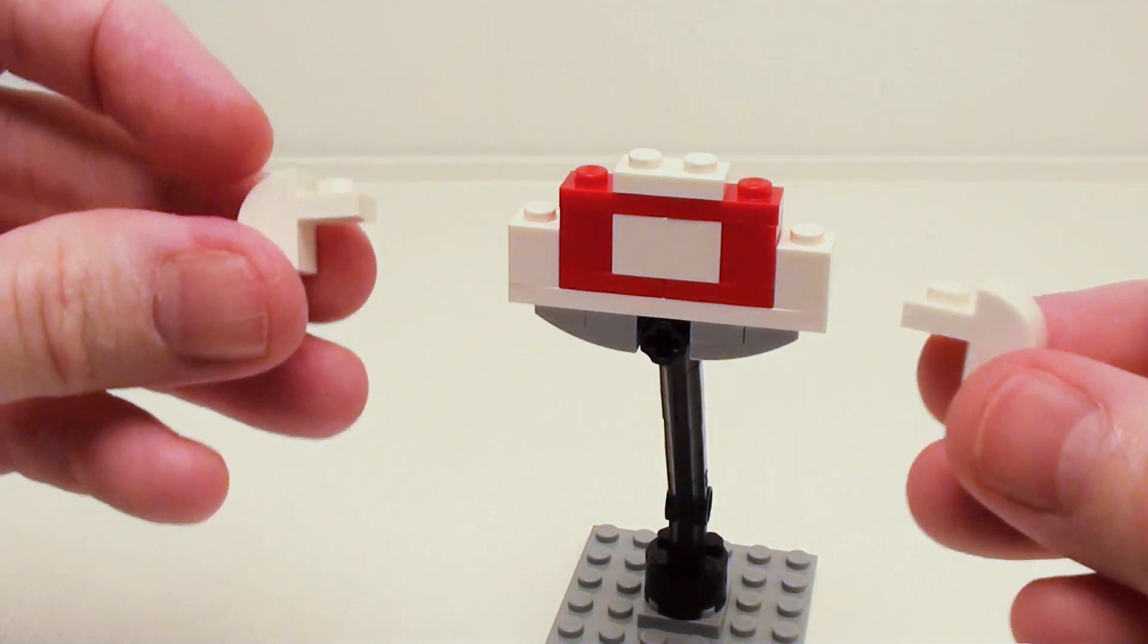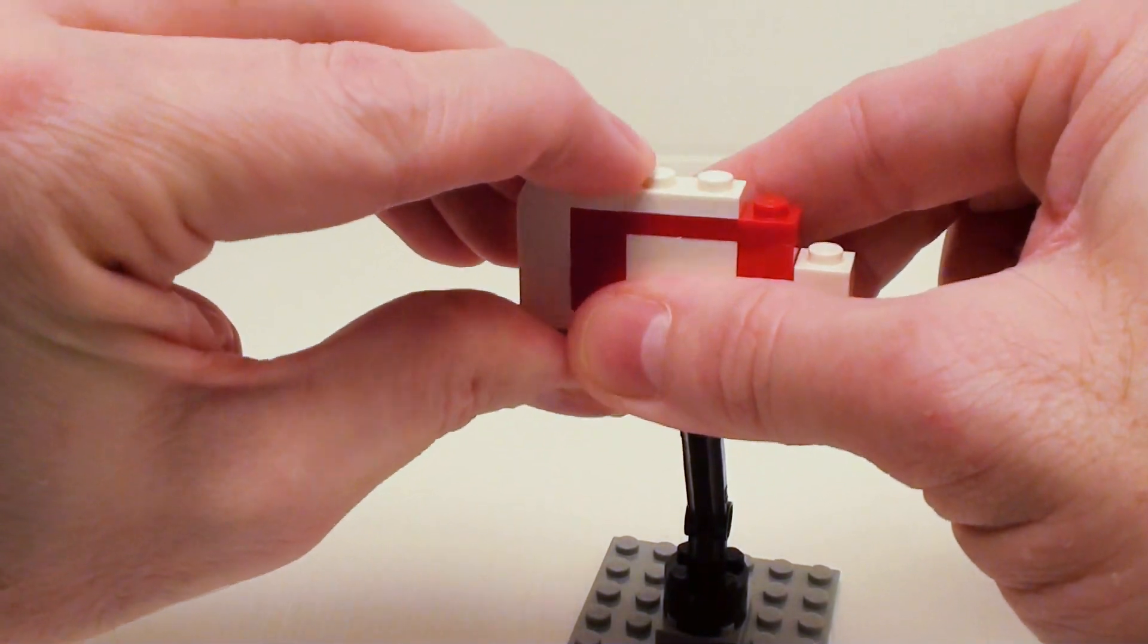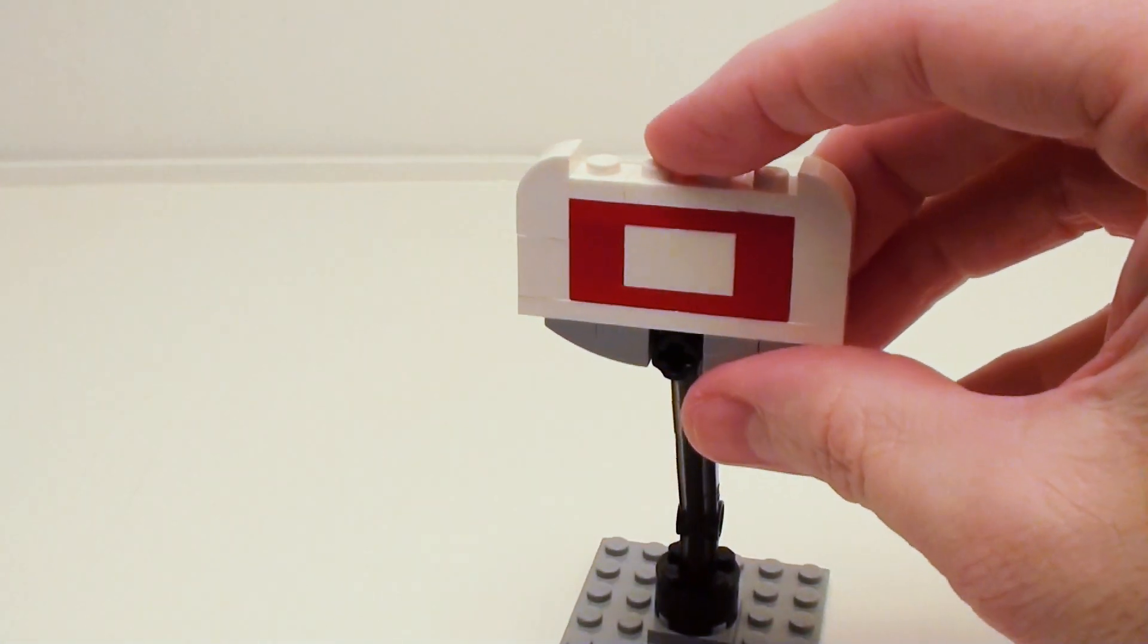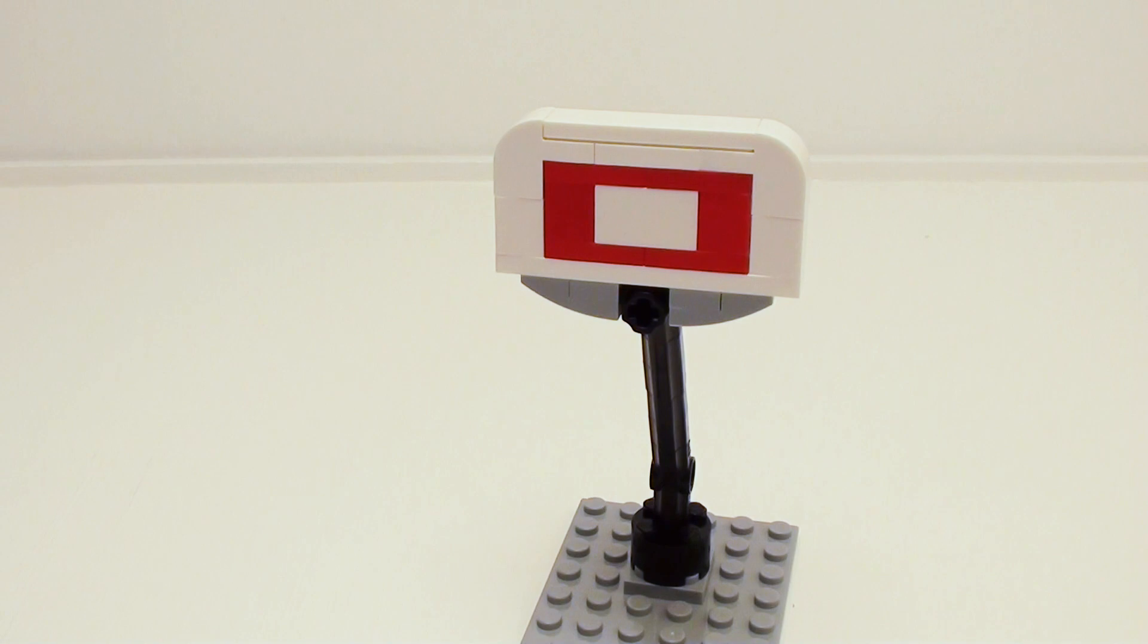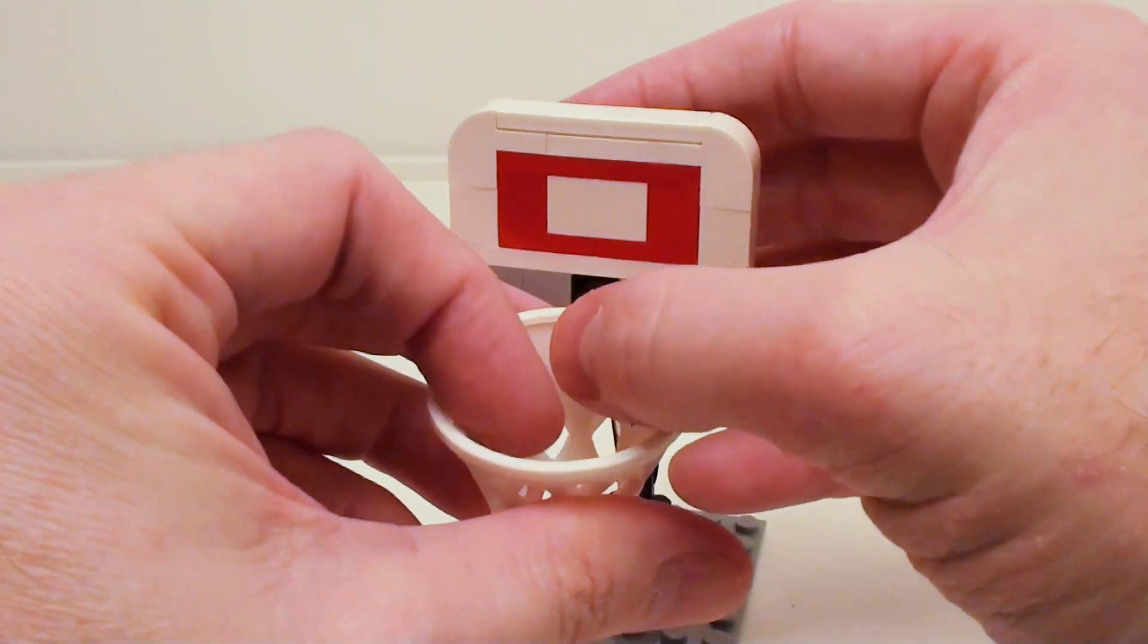We're going to finish off the top starting with a pair of 1 by 1 bricks with bow and a 1 by 4 flat tile in this area. Let's attach our basket. We're going to set this right inside the angle element for a nifty basketball hoop.